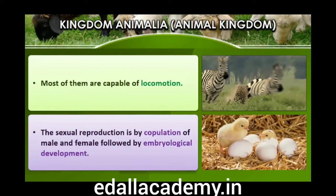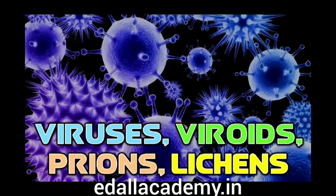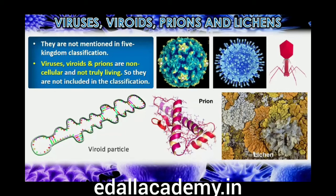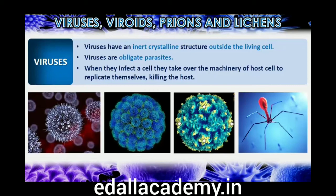2.6 Viruses, Viroids and Lichens. In the Five Kingdom classification of Whittaker there is no mention of some acellular organisms like viruses, viroids and lichens. Viruses did not find a place in classification since they are not truly living. If we understand living as those organisms that have a cell structure, viruses are non-cellular organisms characterized by having an inert crystalline structure outside the living cell. Once they infect a cell, they take over the machinery of the host cell to replicate themselves, killing the host. Would you call viruses living or non-living?